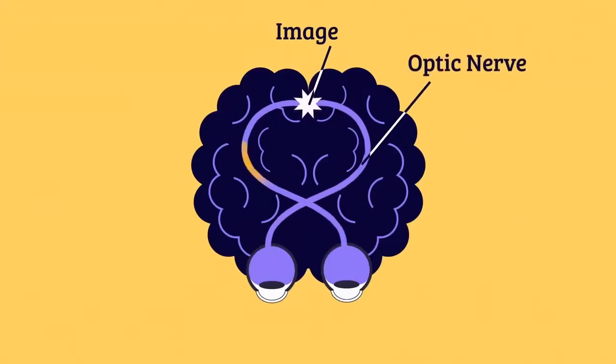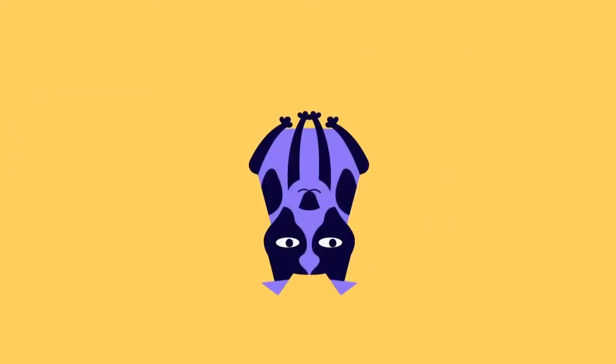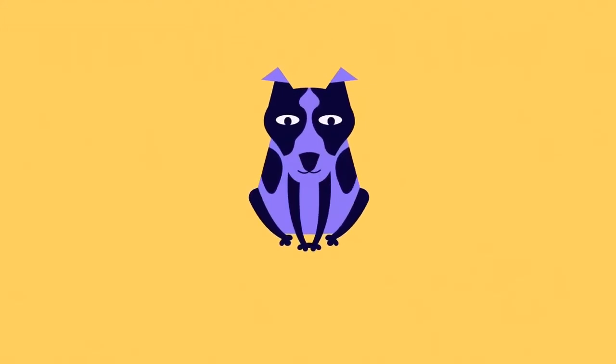Those signals eventually make their way through the optic nerve, which is like a cable connecting the retina to the brain. The retina helps create a rough image, but it sees the world upside down. It's your brain that turns what you see right side up.